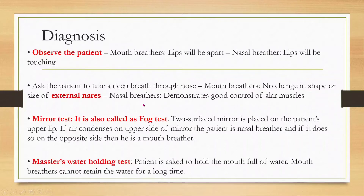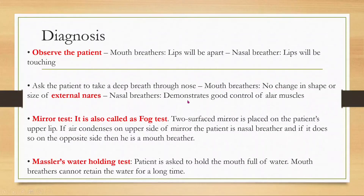In nasal breathers, there is good control of the alare muscles and visible change in the size of the external nose because of airflow through the nasal cavity. The mirror test, also called the fog test, involves placing a two-sided mirror on the patient's upper lip. If air condenses on the upper side, the patient is a nasal breather; if it condenses on the lower side, the patient is a mouth breather.